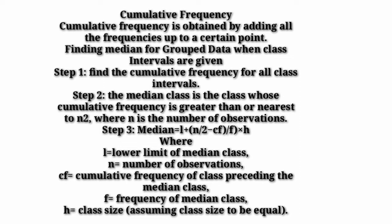Finding median for grouped data when the class intervals are given. Cumulative frequency is needed when the data observations are in a grouped distribution. Step 1: find the cumulative frequency for all the class intervals. Step 2: the median class is the class whose cumulative frequency is just greater than or nearest to n by 2. To find the median class, divide the sum of frequencies by 2, and find the cumulative frequency that is just greater than or just nearest to that value. In this way you can determine the median class. Step 3: apply the formula of median.